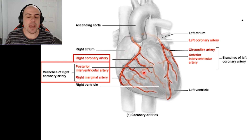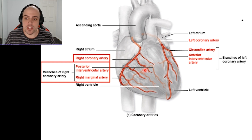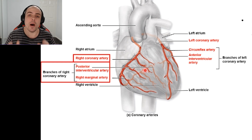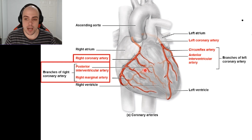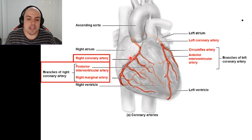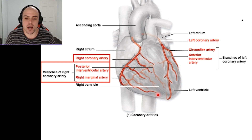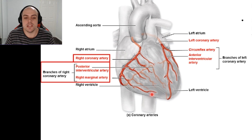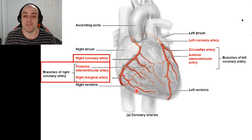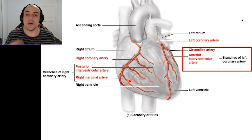The other main one to note is our right marginal artery. What this does is supply blood to the anterior side of our right ventricle and also help deliver blood to the posterior part of the right ventricle as well.